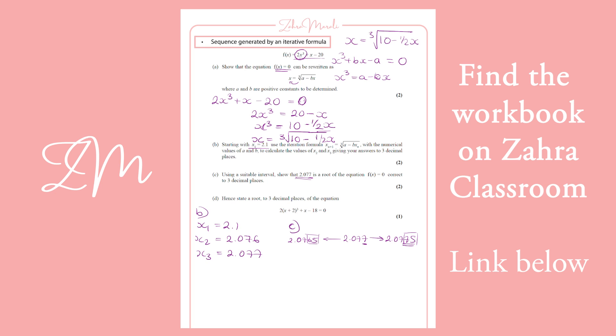So now the important thing is to remember is you're putting it back into the original. You're not putting it into the iterative form. So you're doing f of 2.0765, which is going to give you minus 0.016, which is less than 0.